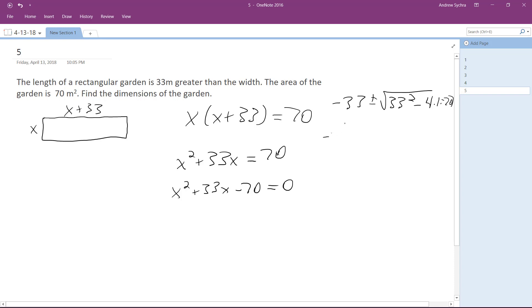So what I'll get is negative 33 - oh, and over 2a, so it's just 2 - plus or minus. Alright, so the square root of 1369 is equal to plus or minus 37 over 2.